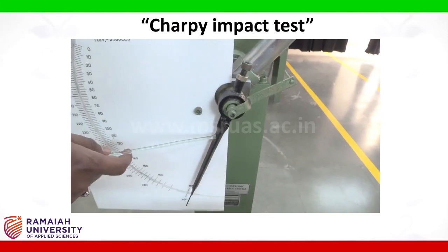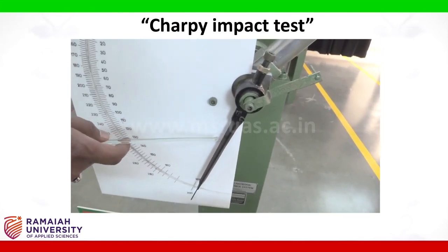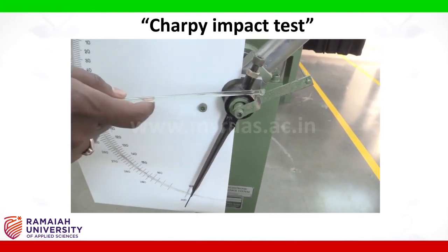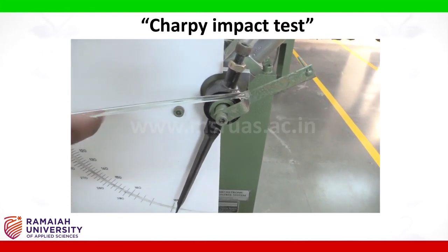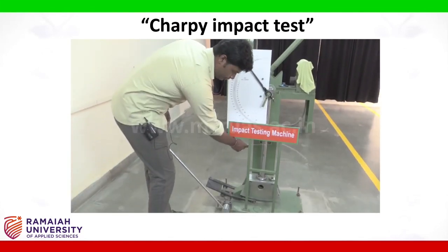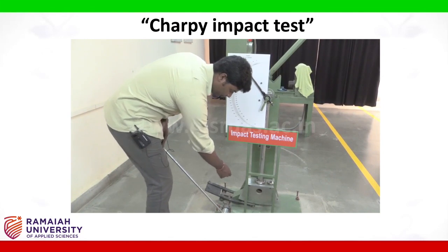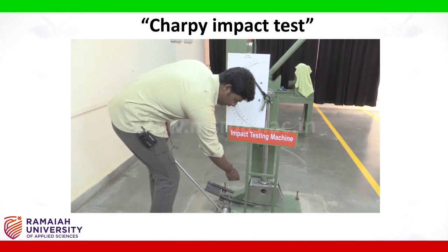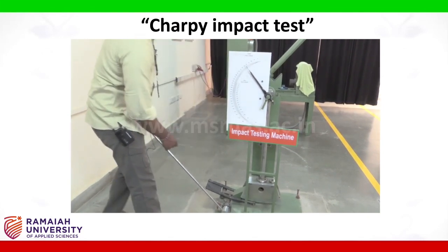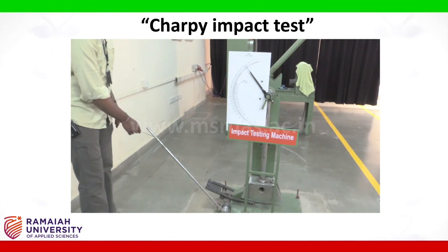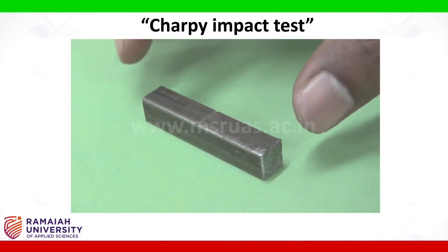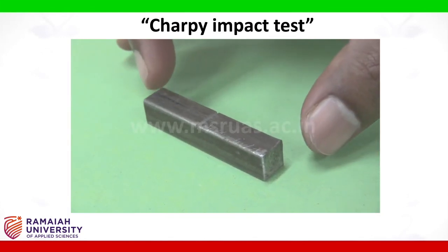This is the dial pointer, which is used to take the reading. This is the pointer carrier. This is the pendulum tube and pendulum hammer. And this is the brake, used to stop the pendulum.